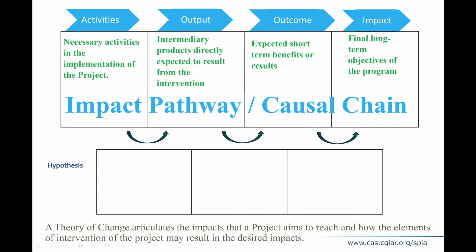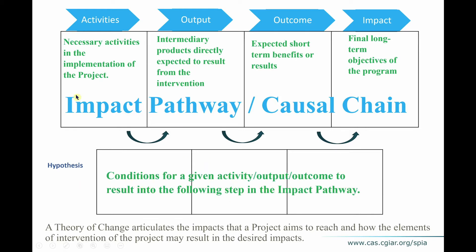Another important element of a theory of change is the set of hypotheses. This is not always included, but it's very important. It tells us what conditions are needed for a given activity to result in the next step of the impact pathway — from activities to output, from output to outcome, and from outcome to impact. Going from activities to output is never automatic; you need some conditions to be met. Making these conditions explicit also helps you understand later why things may not happen as expected once you analyze the project.